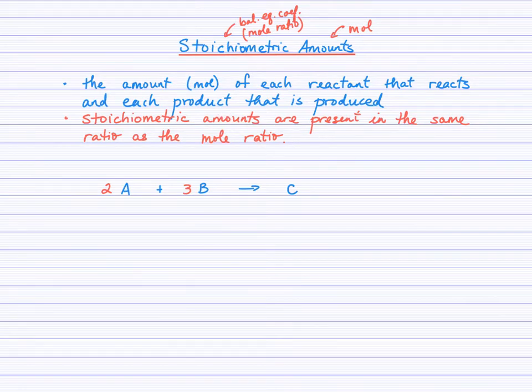So for example, if we had two moles of A reacting, then what would be the amount of B required to react? Well, it's going to follow the mole ratio here. So if we have two moles of A, we'll need three moles of B, and that will produce one mole of C.